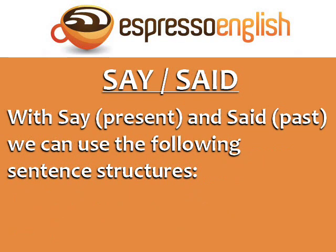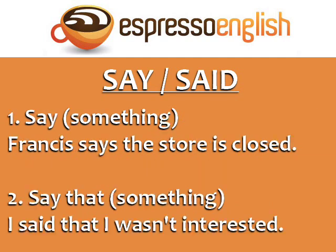With Say, present, and Said, past, we can use the following sentence structures. Number one: say something. Francis says the store is closed. Number two: say that something. I said that I wasn't interested.